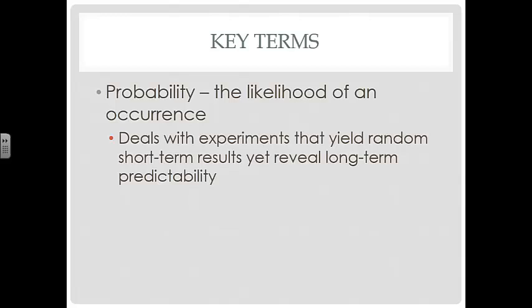Let's go over some of our key terms. Probability is the likelihood of an occurrence, and it deals with experiments that yield random short-term results yet reveal long-term predictability.